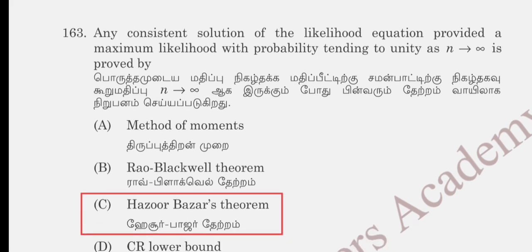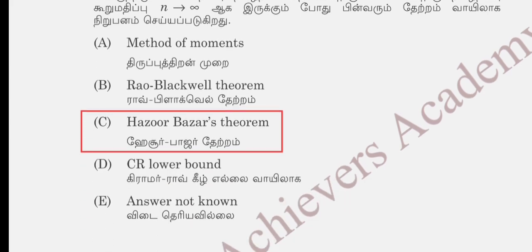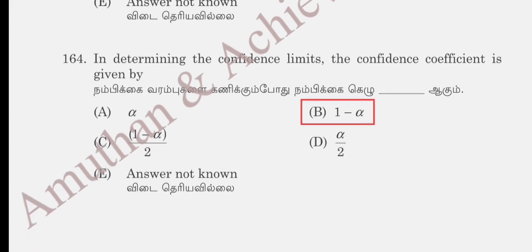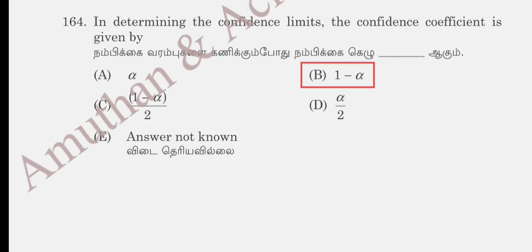Any consistent solution of the likelihood equation that provides a maximum likelihood estimator has a probability tending to unity as n tends to infinity. This result corresponds to the Rao-Blackwell theorem, the Azur-Bassar theorem, or the CR lower bound. The Azur-Bassar theorem is the correct answer. In determining the confidence limit, the confidence coefficient is denoted by 1 − alpha, and the correct option is 1 − alpha.